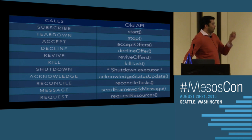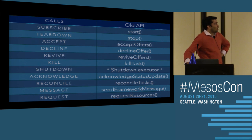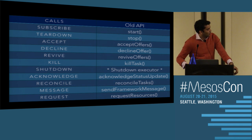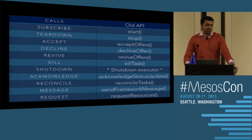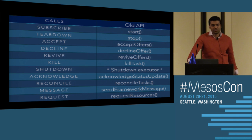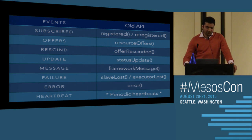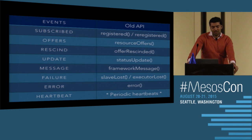Looking at the actual calls mapped to the old API: we have a subscribe call and teardown to start and stop the control flow, and most other calls are easily relatable to the old API. The only new call added is a shutdown call to shut down your executor — previously you had to have that logic in the executor itself, but now a scheduler can send the signal through Mesos, much like kill task. On the event side, it's very familiar: you get a subscribed event initially, then offers, messages, and status updates. The only new addition is heartbeats sent periodically by the master.